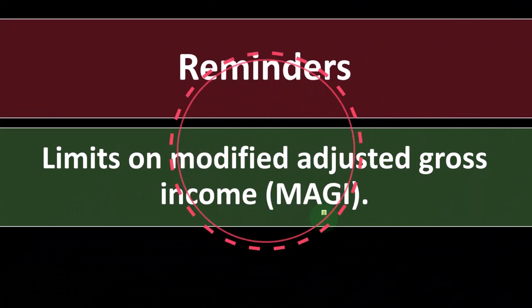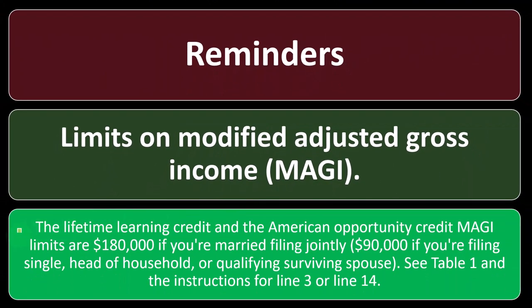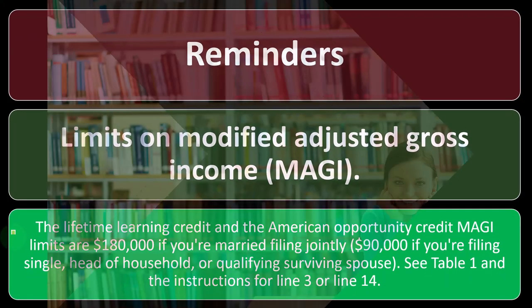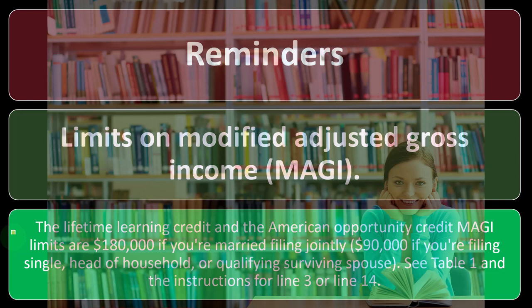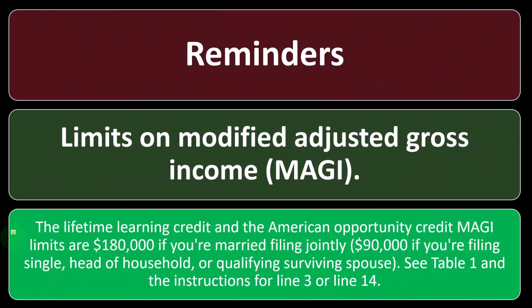The Lifetime Learning Credit and the American Opportunity Credit MAGI limits are $180,000 if you're married filing jointly, and $90,000 if you're filing single, head of household, or qualifying surviving spouse. See Table 1 and the instructions for Line 3 or Line 14.